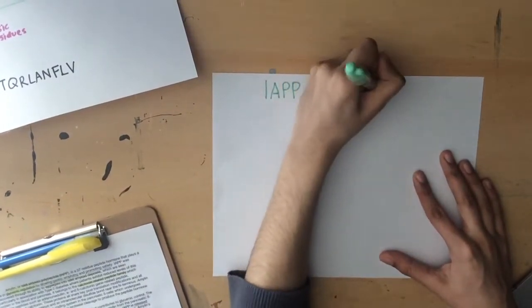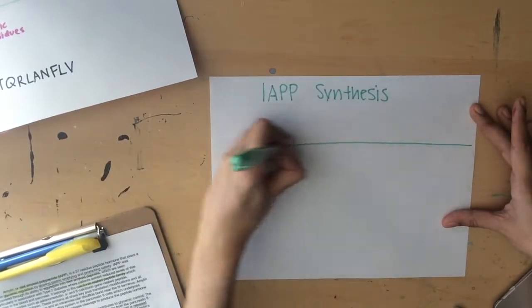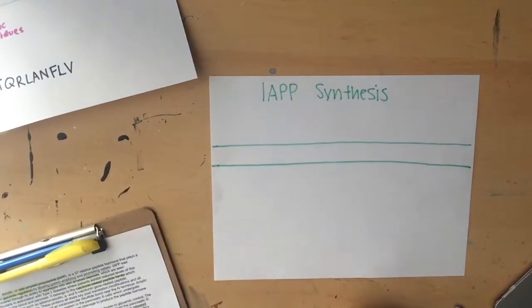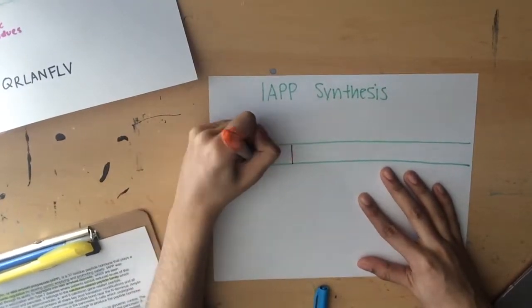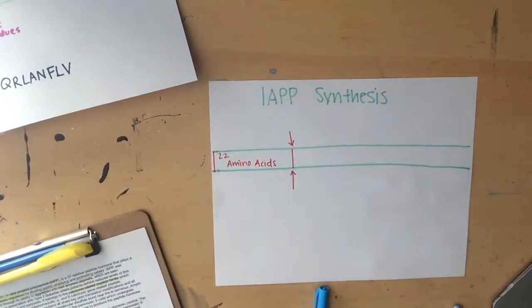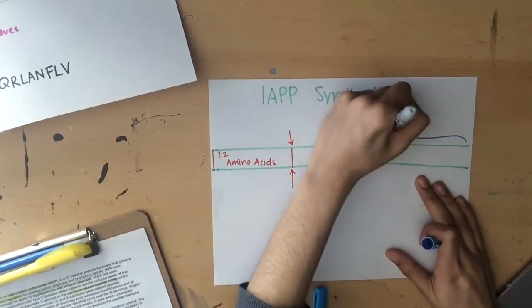IAPP consists of a 67 residue protein, which follows a 22 amino acid signal that is rapidly cleaved after translation. The first 22 amino acids constitute the signal sequence, and the next 67 amino acids are the proform, or pro-IAPP.